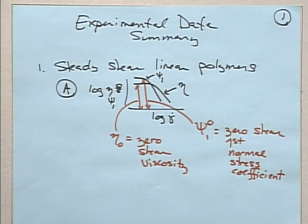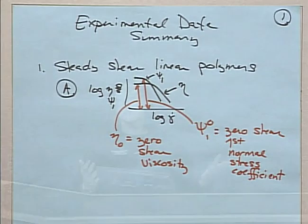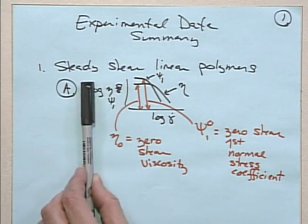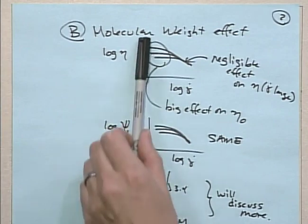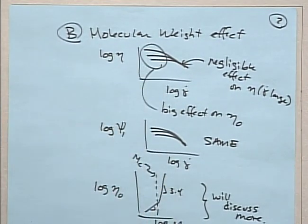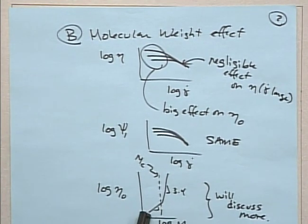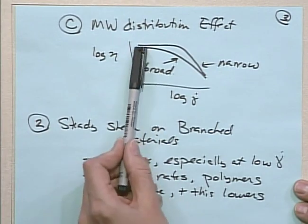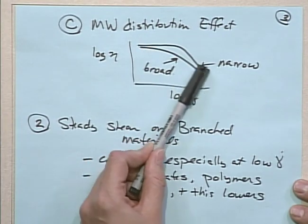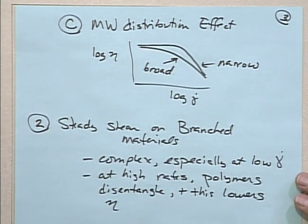We've been producing a summary sheet of experimental behavior that I'm asking you to learn - these qualitative pieces of behavior - because we're going to use them to discriminate between constitutive equations. Previously we talked about steady shear material properties and how they changed with kinematic parameters (shear rate) and with molecular weight. We saw how viscosity and first normal stress difference changed, and we noted that the zero shear viscosity versus molecular weight forms a very particular shape, although the high shear rate viscosity is unaffected by molecular weight. We also pointed out the effect of molecular weight distribution, which is to broaden the distribution between the plateau and the steady shear behavior.